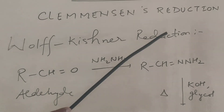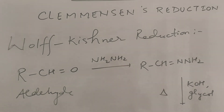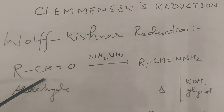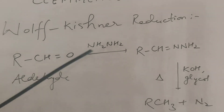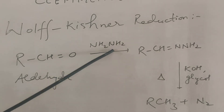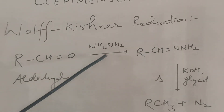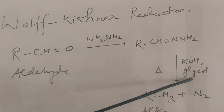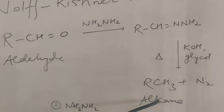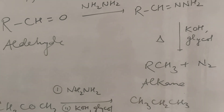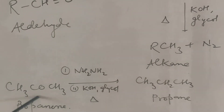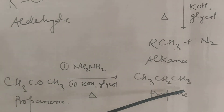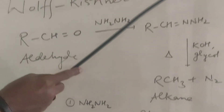Now we are going to discuss Wolf-Kishner reduction, another method by which carbonyl compounds can be reduced to alkanes. An aldehyde or ketone is treated with hydrazine to form a hydrazone. The hydrazone is then treated with alkali (KOH) in the presence of glycol and heated, giving alkane and releasing nitrogen gas. For example, propanone treated with hydrazine, KOH, glycol, and heat gives propane.